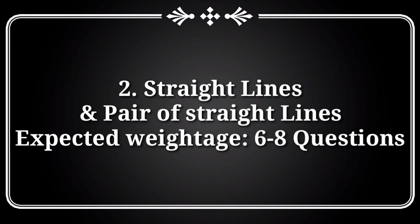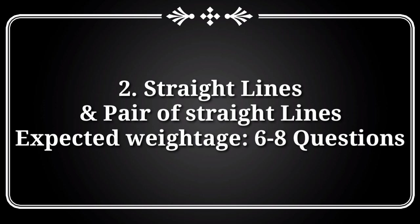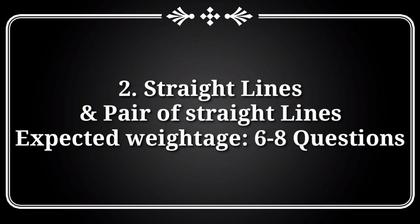After that, you should start with the chapters Straight Lines and Pair of Straight Lines. By combining these two chapters, nearly 6 to 8 questions will be asked in M set. The important topics are different types of lines, incentre, angle between the two parallels, length of tangent, and point of intersection. Problems from these topics are very important, so you should focus more upon them.